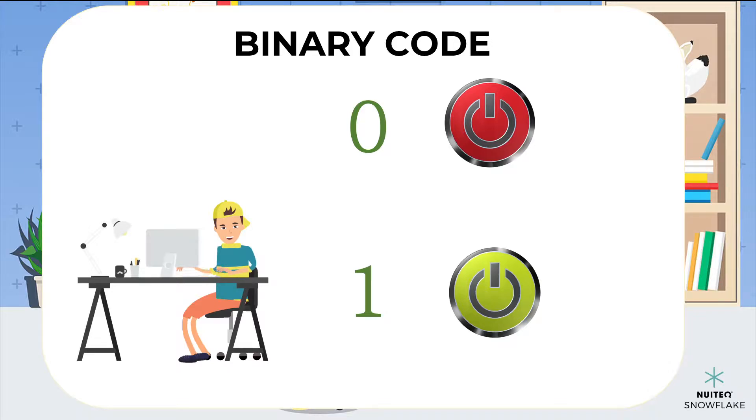Every time you press a button on your keyboard, your computer reads the 1s and 0s, and turns switches on and off.